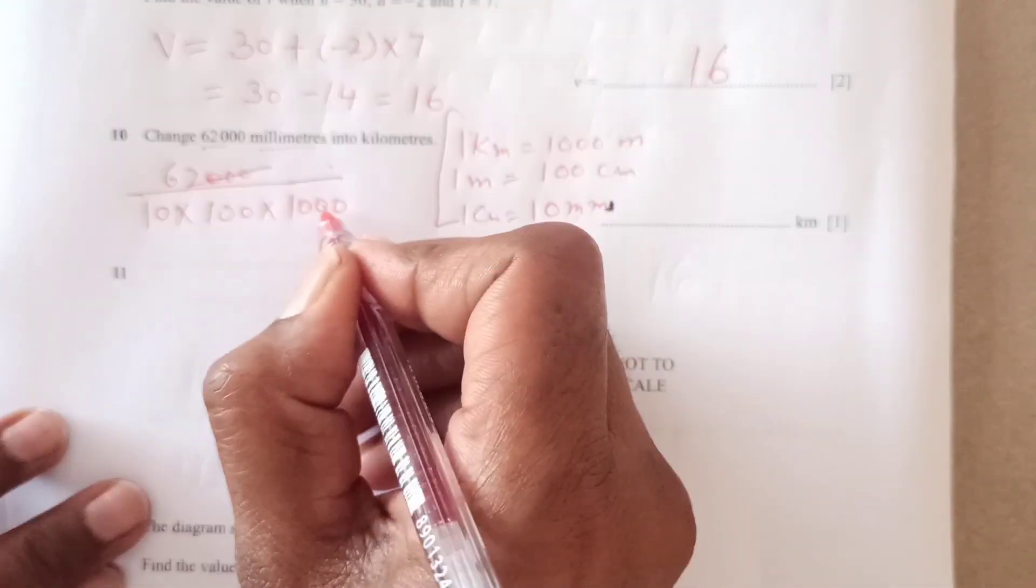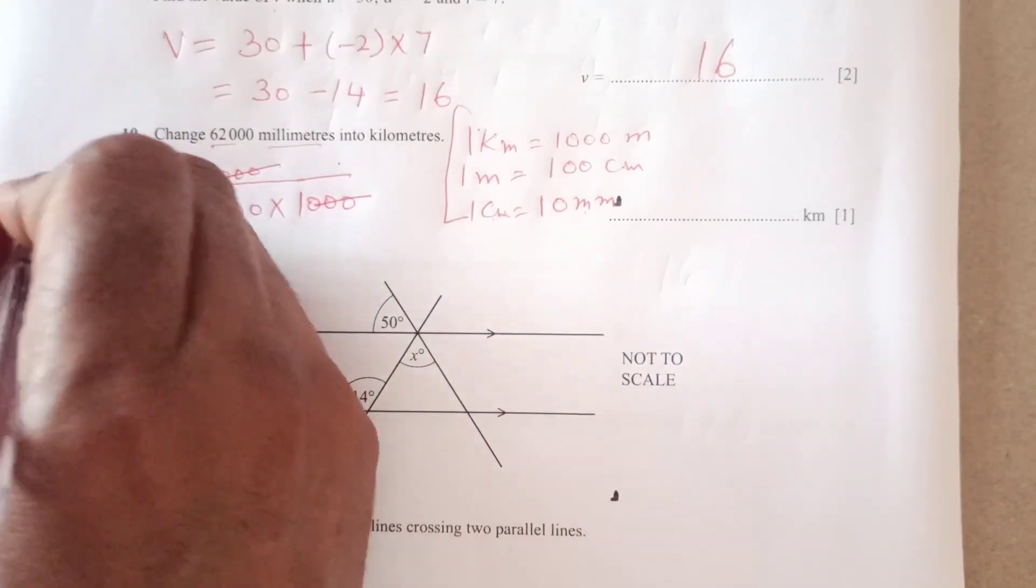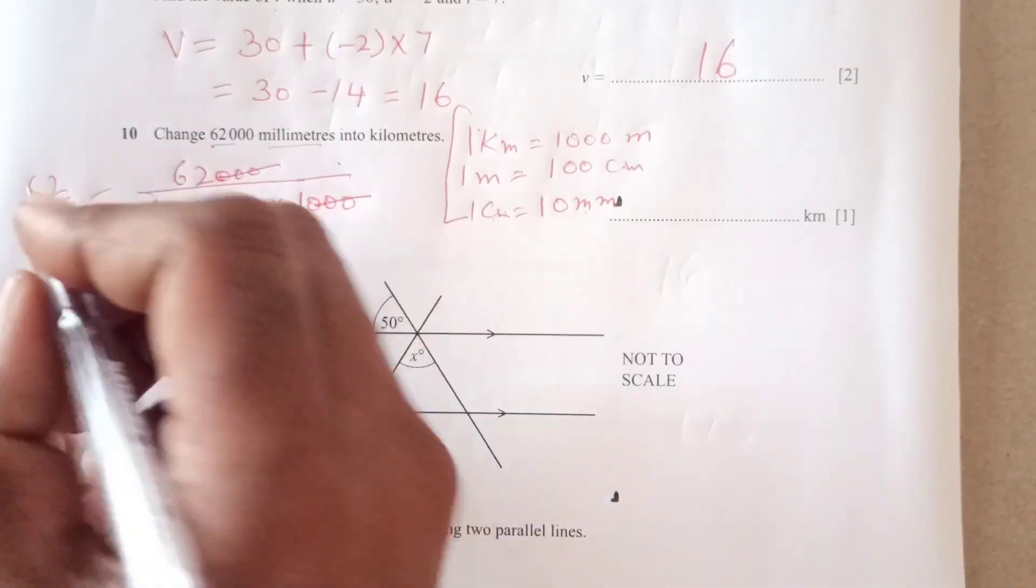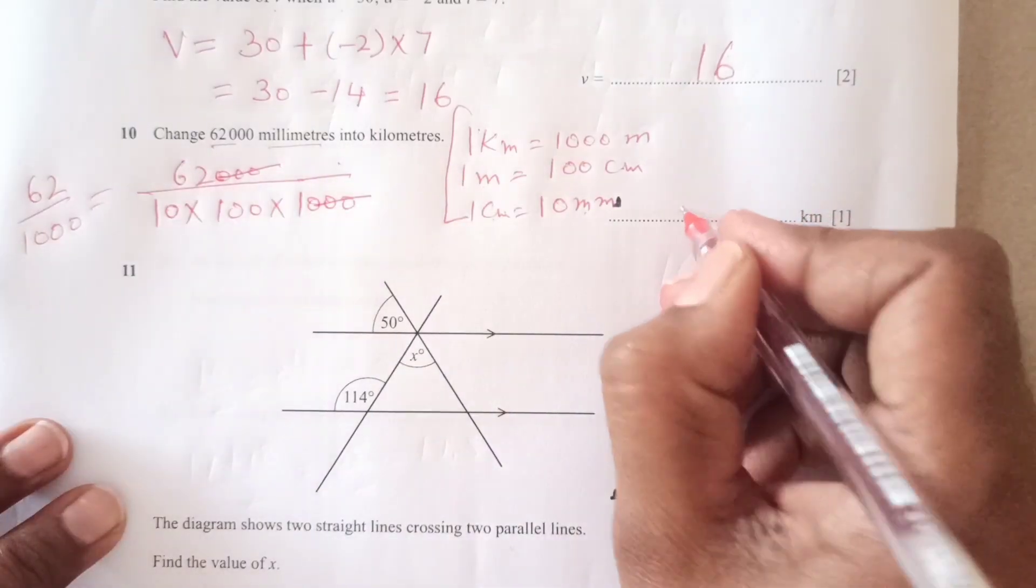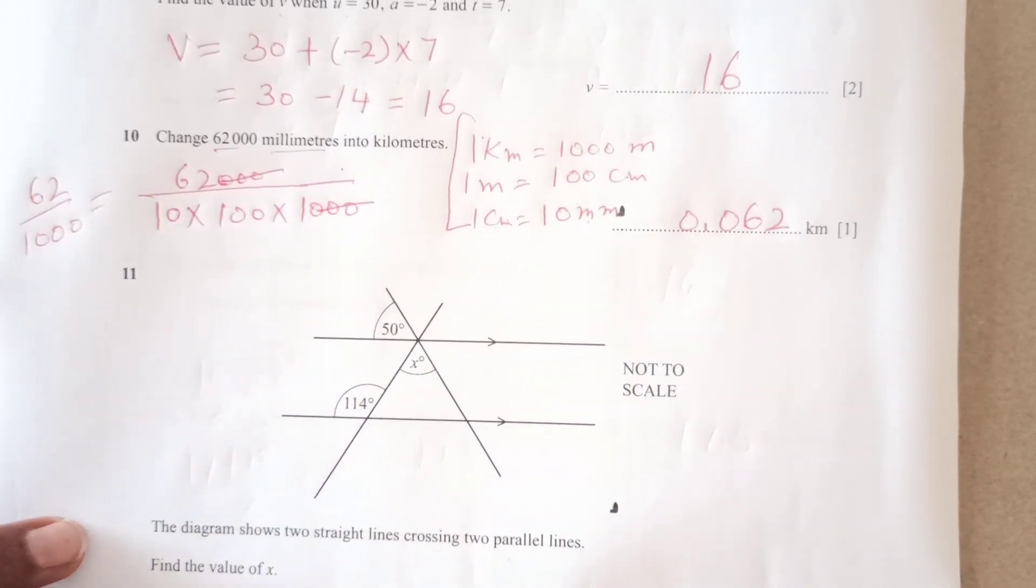So this is what we are going to get here. So these three zeros canceled. So we have 62 over 1000. So that is going to be 0.062 in decimals, right?